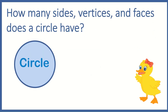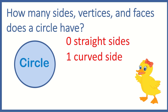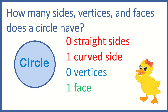Can you look around the room and see how many circles you can find? How many sides, vertices, and faces does a circle have? A circle is round, so it does not have any straight sides, but it has one long curved side. Since a circle doesn't have any straight sides, that means it doesn't have any vertices — a circle has zero vertices. A circle is a 2D shape, so it has one flat face.